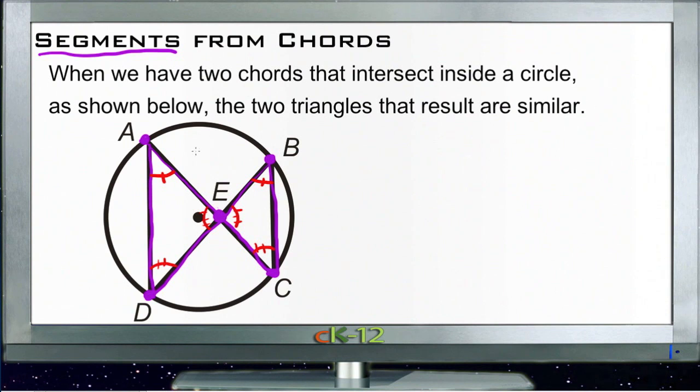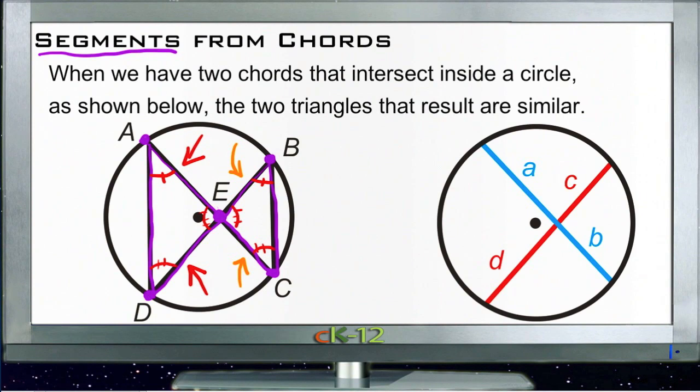Which means that if we were to take this side here and divide it by this side here, the resulting fraction would be the same as if we were to take this side here and divide it by this side here. And that's kind of convenient, because it tells us that we can then take the information we have to calculate how long these things are from little bits of information.